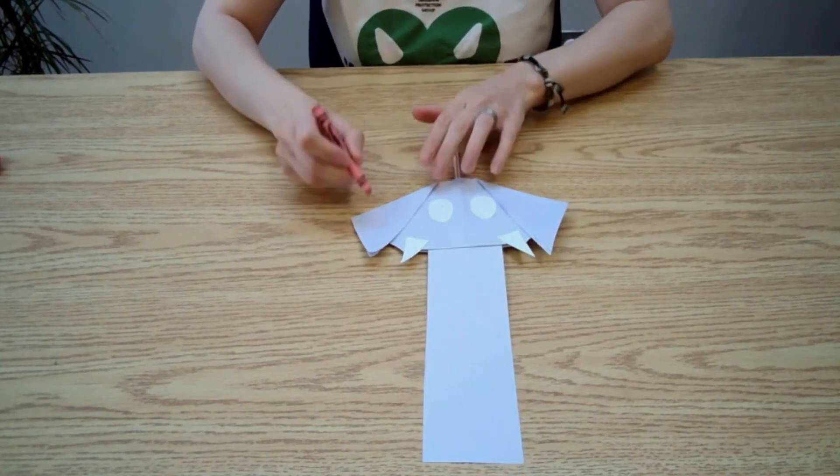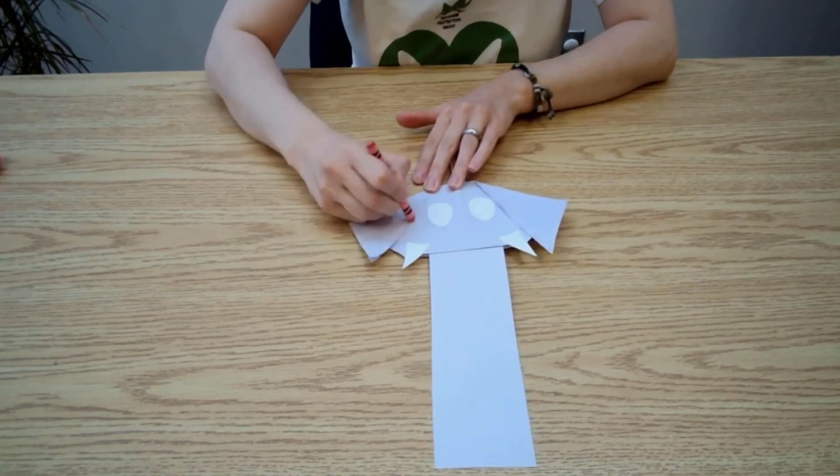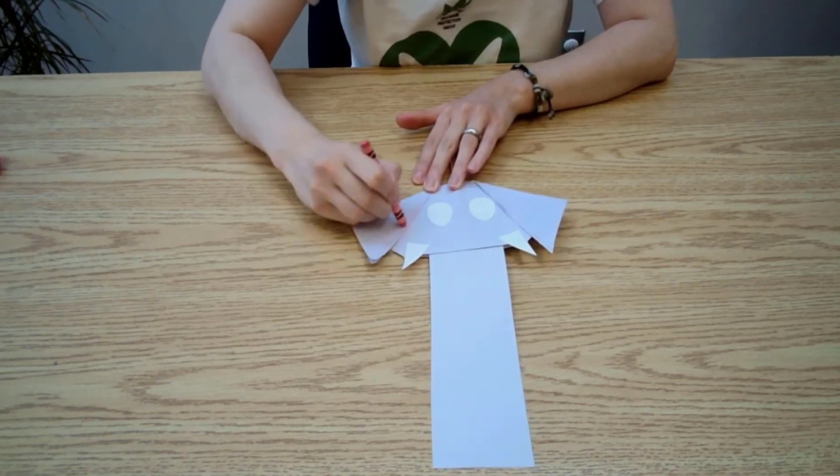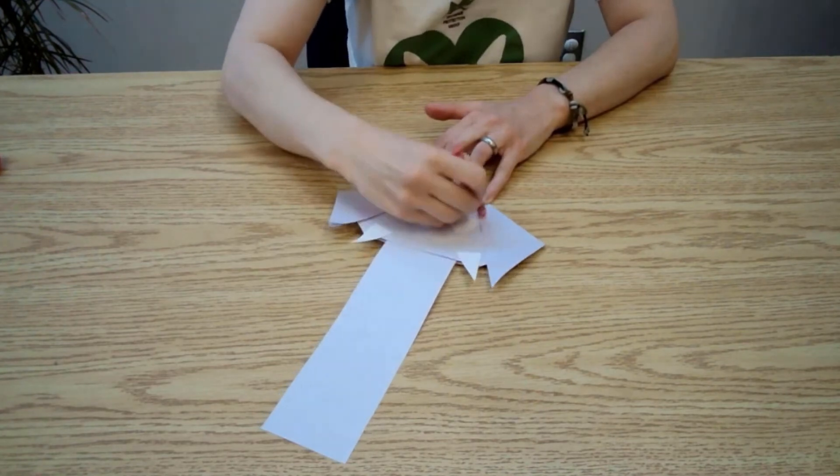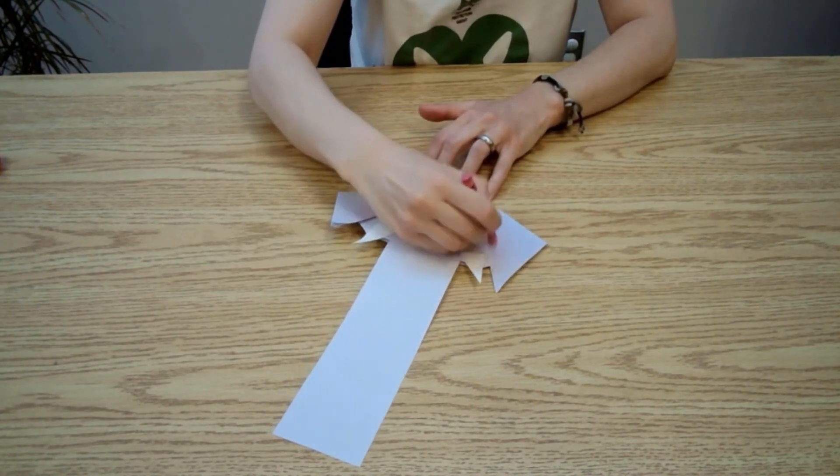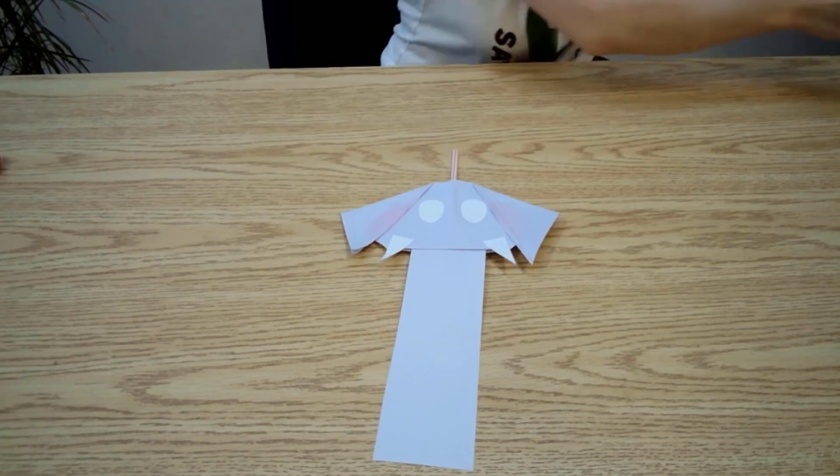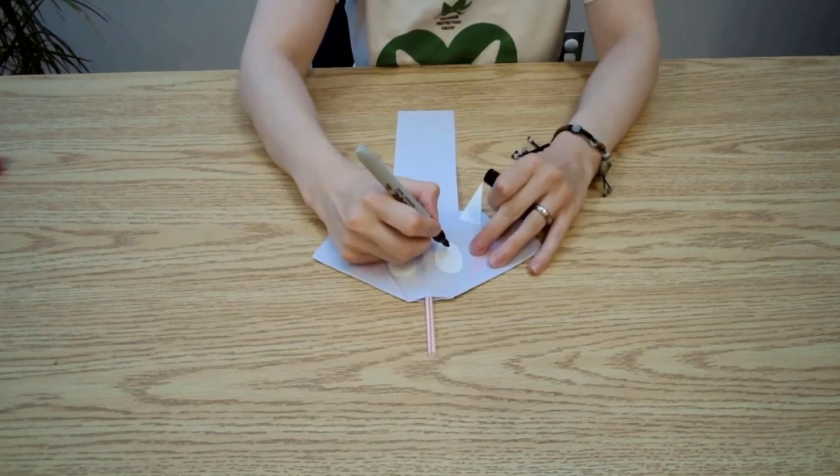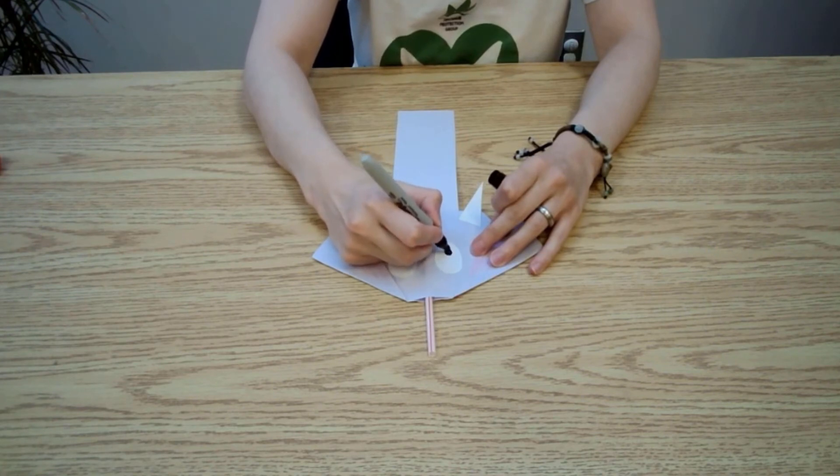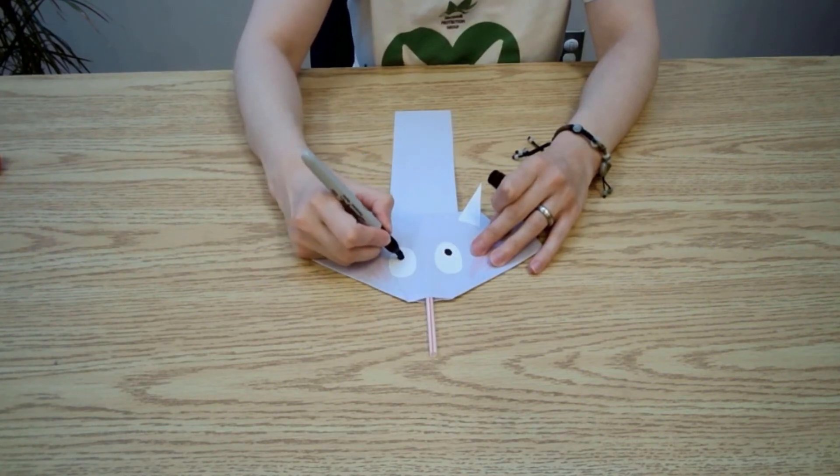Add details with colors such as ears, pupils. Maybe you want to draw some wrinkles on your elephant's nose. You can use markers or crayons, whatever you have at home.